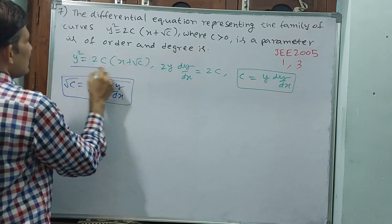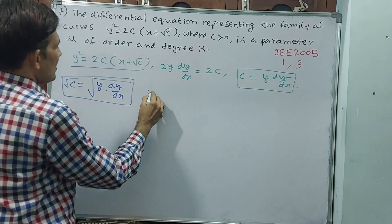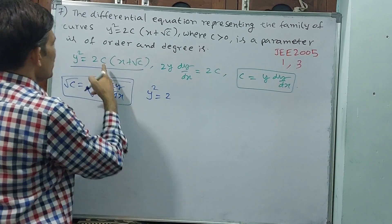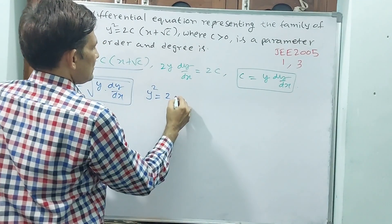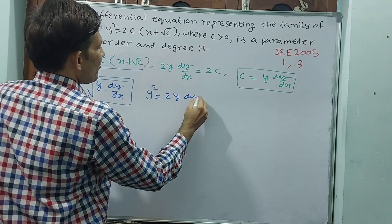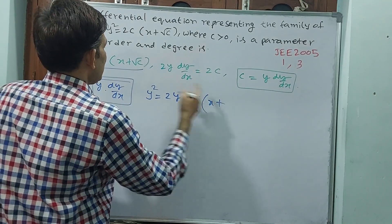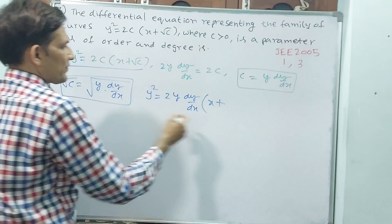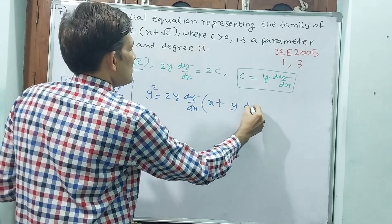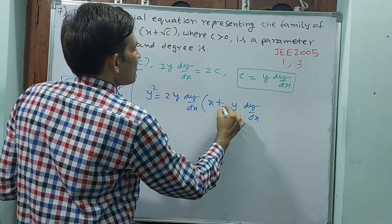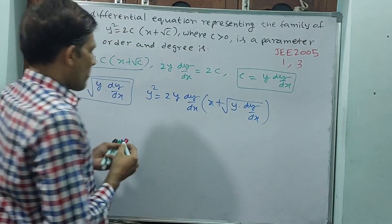If I substitute, y² = 2·c·x + √c becomes y² = 2·(y·dy/dx)·x + √(y·dy/dx). Now this we can say y is common.